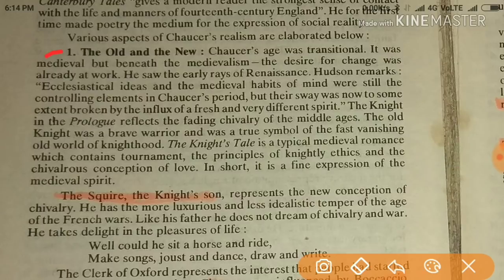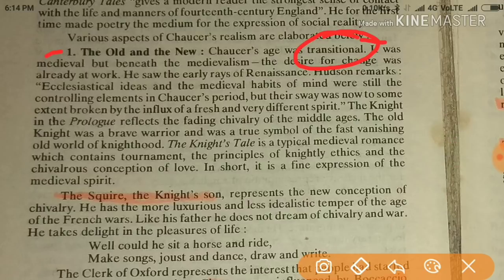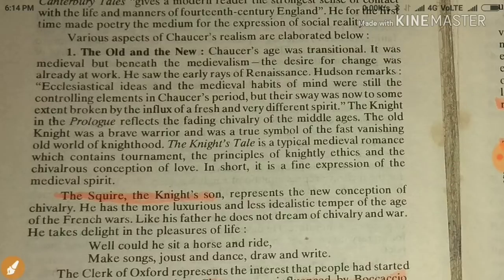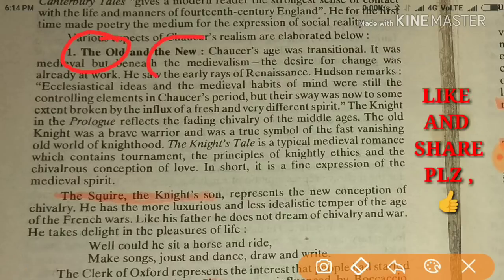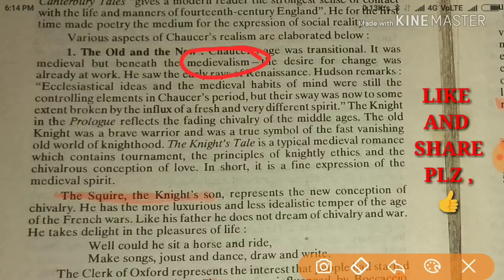Chaucer's age was transitional. A transitional period is the in-between period when one era ends and another begins. This transitional period had two sides: the old days and the new. English language was getting developed, and this was the period between medievalism and the new learning.